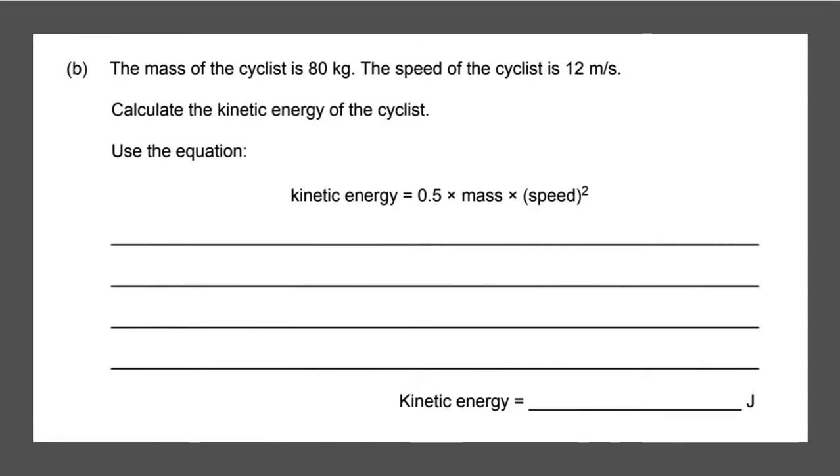Next question. The mass of the cyclist is 80 kilograms. The speed of the cyclist is 12 meters per second. Calculate the kinetic energy of the cyclist. Use the equation. So we've given the equation over here. So we just have to put in our numbers. So we have 0.5 multiplied by the mass which is in kilograms. So we don't have to convert anything. Multiplied by the speed 12 squared. We just type this into our calculator.